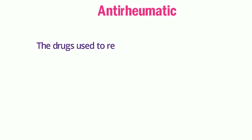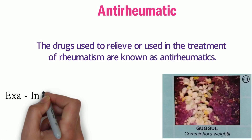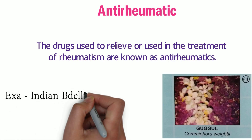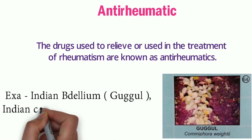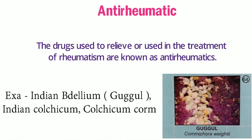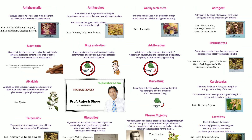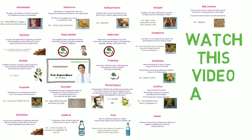The drugs used to relieve or treat rheumatism are known as anti-rheumatics. Examples include Indian bdellium (guggul), Indian colchicum, and colchicum. The video ends with an instruction to repeat this video.